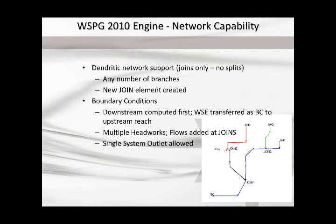The branch network allows for a more complete system to be modeled. The junction element still exists — those familiar with WSPG know it — and you can add flows in or add a negative flow to take flow away. It's joins only; there are no splits. Questions have come up about modeling split networks, and that would require more sophisticated modeling outside of WSPG.